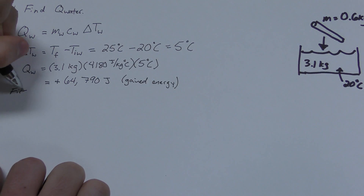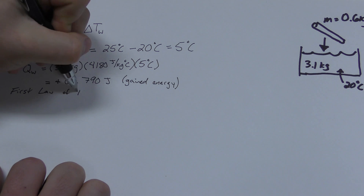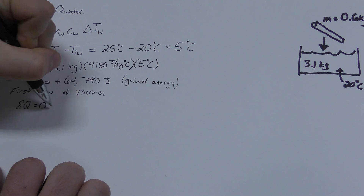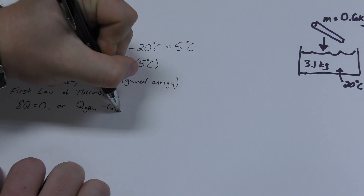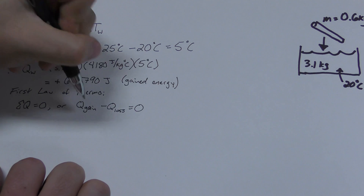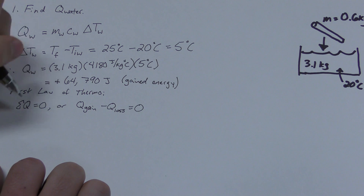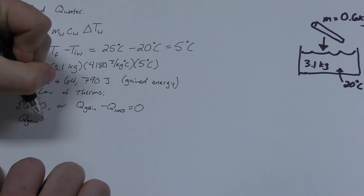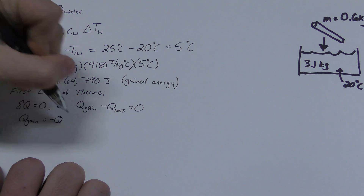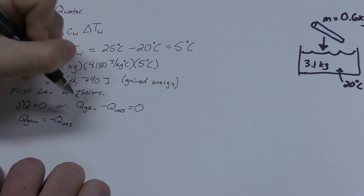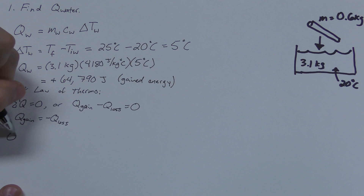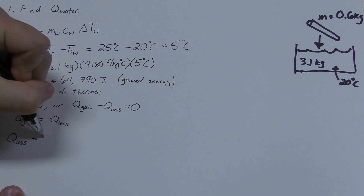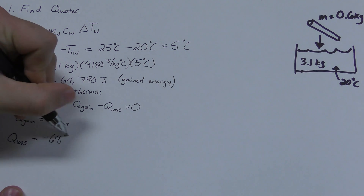The first law of thermodynamics states that if a system gains energy, work was done on it, or that the sum of all the thermal energy must equal zero. That means that the energy that the water gained must have been lost, or have a negative sign, by the steel.